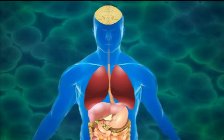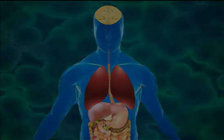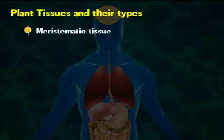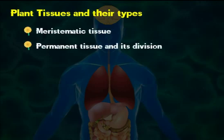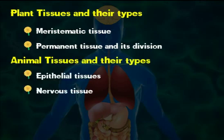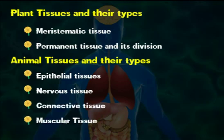Studying this chapter, you will learn about the different types of tissues in detail: plant tissues and their types, which are meristematic tissue, permanent tissue and its divisions, animal tissues and their types — epithelial tissue, nervous tissue, connective tissue, and muscular tissue.